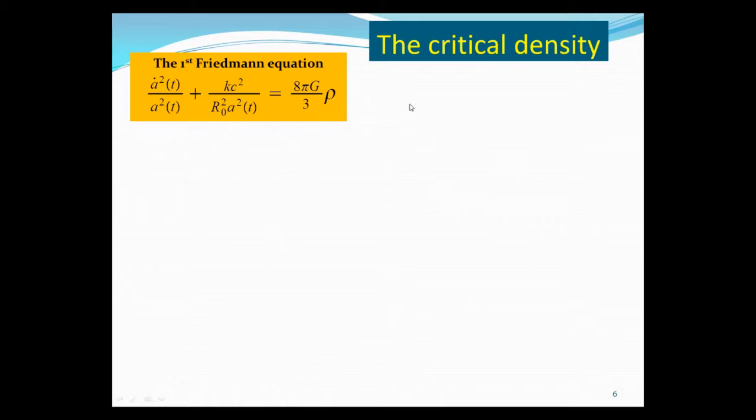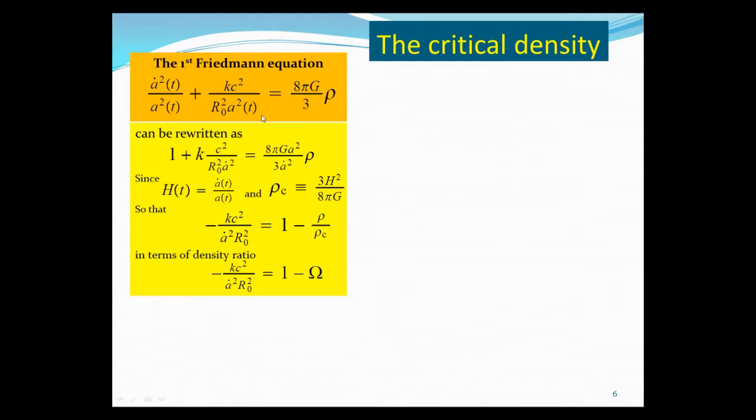We're now going to talk about the critical density. Remember we introduced the critical density, and now we see how it comes from. Let's look at the first Friedmann equation. It can be rewritten by basically dividing the first factor in which we multiply a² over ȧ². And so this is 1, and a² just cancels a² here, so just replace the a² term by an ȧ² term. And this is a² over ȧ² on the right-hand side. Now, but ȧ/a is the Hubble constant at a time t. And so therefore, this is just basically Hubble's constant in the denominator.